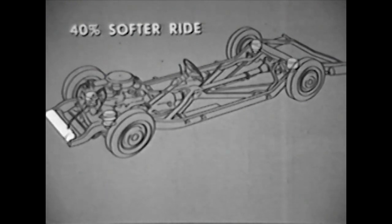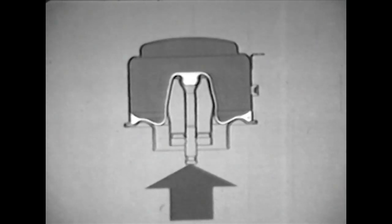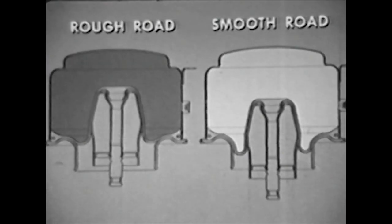On smooth roads, the ride is soft - 40% softer than even Buick's all coil springs. And when the road is rough and the wheels want to bounce, the shape of the plunger and the air chamber automatically increases the degree of firmness of the suspension. The rougher the road, the greater the degree of resistance to wheel bounce and therefore body bounce.